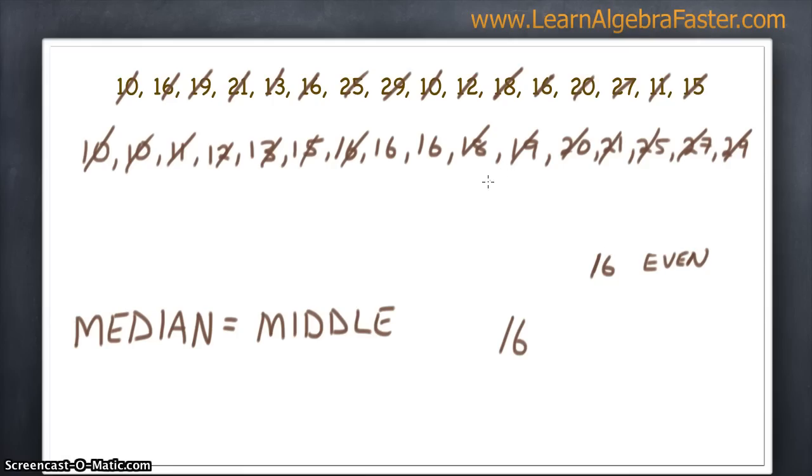Sometimes what will happen is you'll have two middle numbers that are not the same, so perhaps 16 and 17. If this were the case and these two numbers were in the middle, you would add them and divide by 2, which would give you 16.5 as your median.